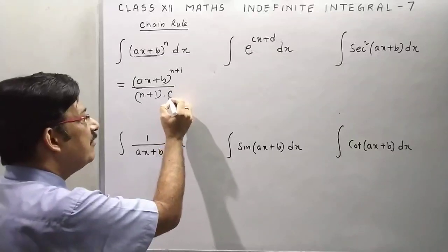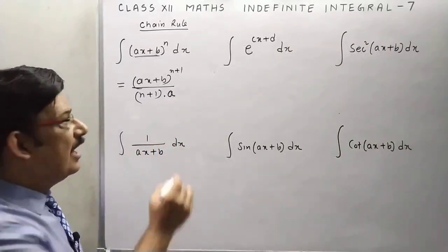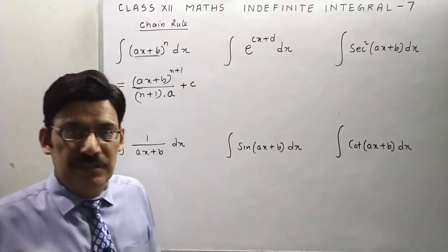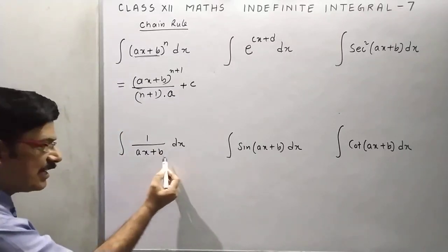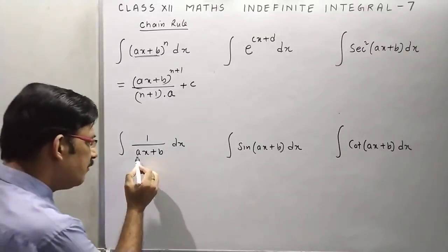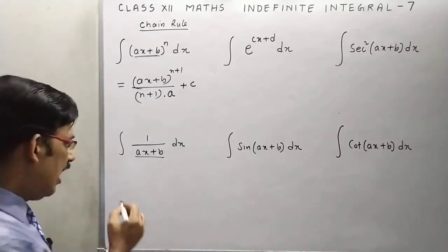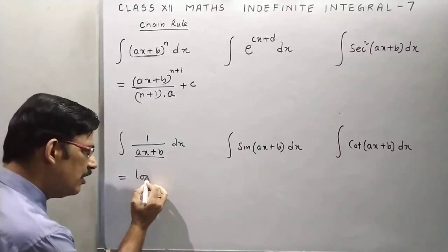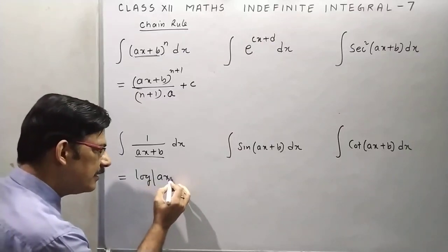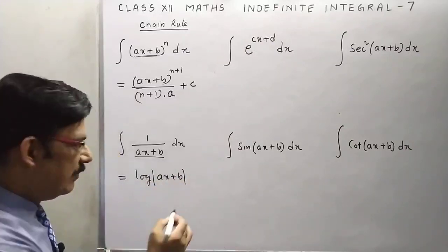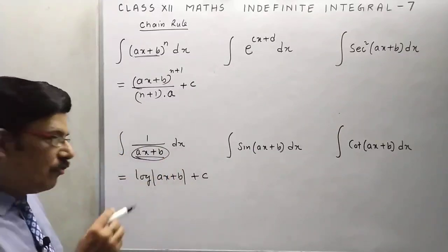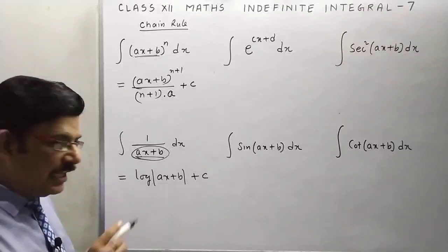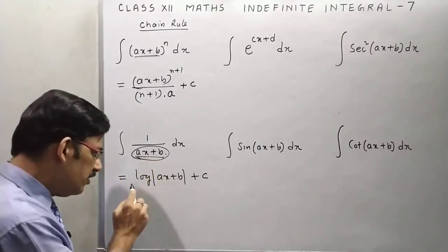Now second question, we have 1 upon ax plus b. Let us suppose this is x, and we have formula for 1 upon x: log x plus c. But we have supposed this as x, so we have to differentiate this. Derivative ax plus b means a, so we have to divide the answer by a.